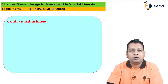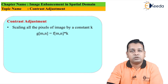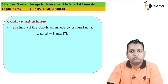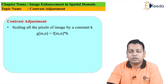For simple contrast adjustment, given an input image with its total number of pixels, we scale all pixels by a constant k — simply a multiplication of the constant k with the input image. Here f(m,n) represents the input image to be enhanced, and it is multiplied by the constant k so that each pixel intensity is scaled to a new intensity level. The output image after contrast adjustment is referred to as g(m,n).